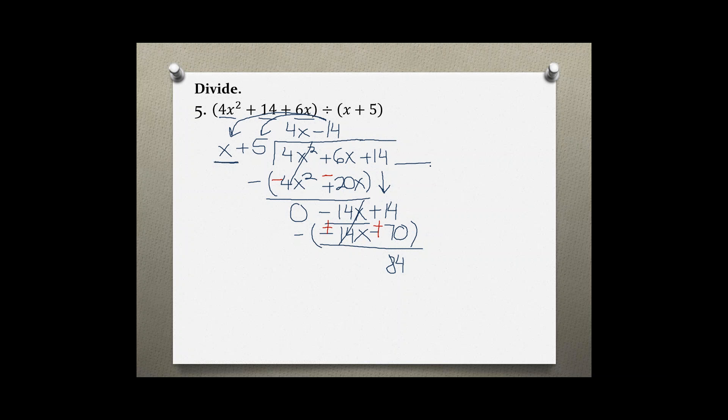We have nothing left, so this would be our remainder, and to write the answer, we start with this part, 4x minus 14, and then we also have our remainder left over, which we were not able to divide by x plus 5. So all this would be the answer to our division problem.